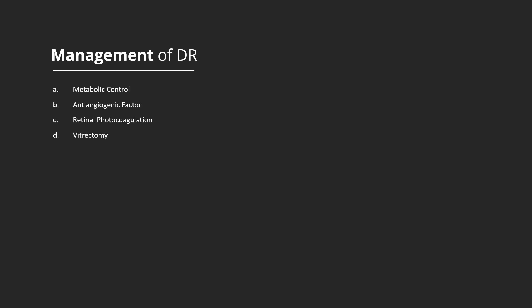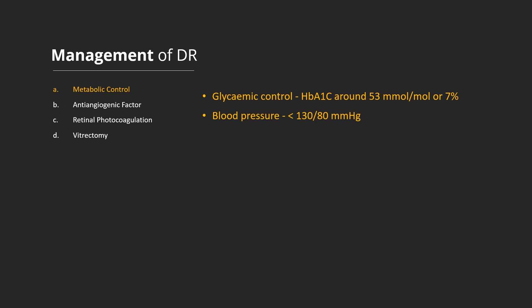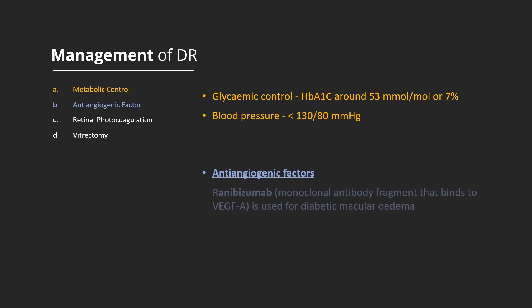Management of diabetic retinopathy. Good glycemic control with an HbA1c around 53 mmol/mol or 7%, and appropriate blood pressure of less than 130/80 mmHg, should be maintained to prevent the onset and delay the progression of diabetic eye disease. Anti-angiogenic medications have been developed. Ranibizumab is a monoclonal antibody fragment that binds to vascular endothelial growth factor A, and is used for diabetic macular edema.